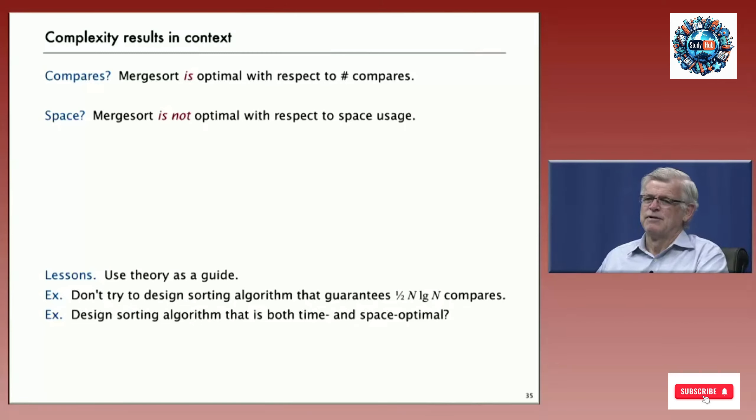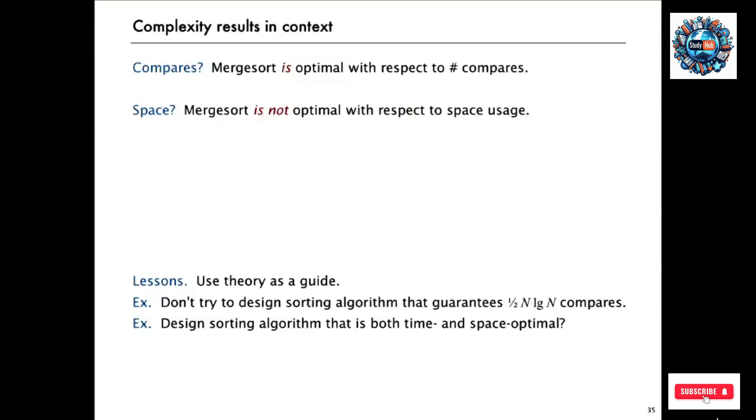So what we want to take from these theoretical results is a guide when we're looking at implementations and trying to solve practical problems. In this example, what the theory tells us is don't try to design a sorting algorithm that guarantees to use substantially fewer compares than merge sort. Say half N log N compares. Is there a method that uses half N compares? The lower bound says no. And that's a very useful thing because otherwise we might try to define such an algorithm. On the other hand, maybe there is an algorithm that uses N log N compares and also uses optimal space. It's optimal with respect to both space and time. And that's what we're going to look at soon.